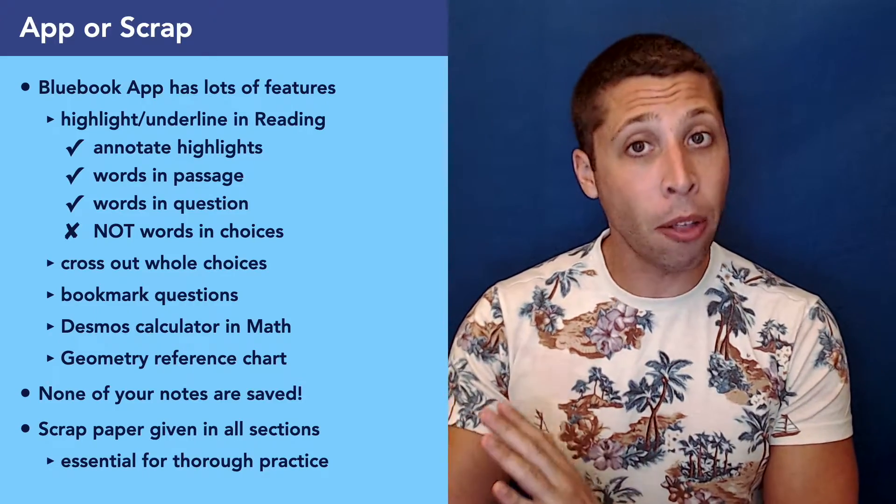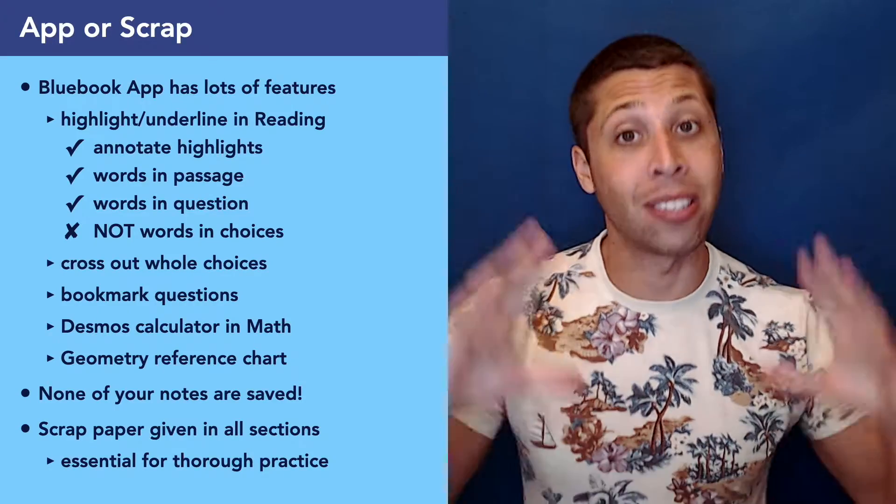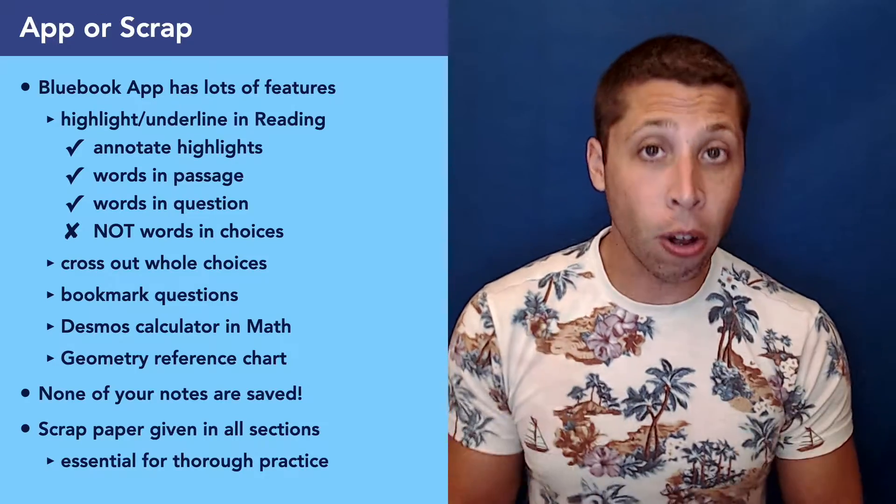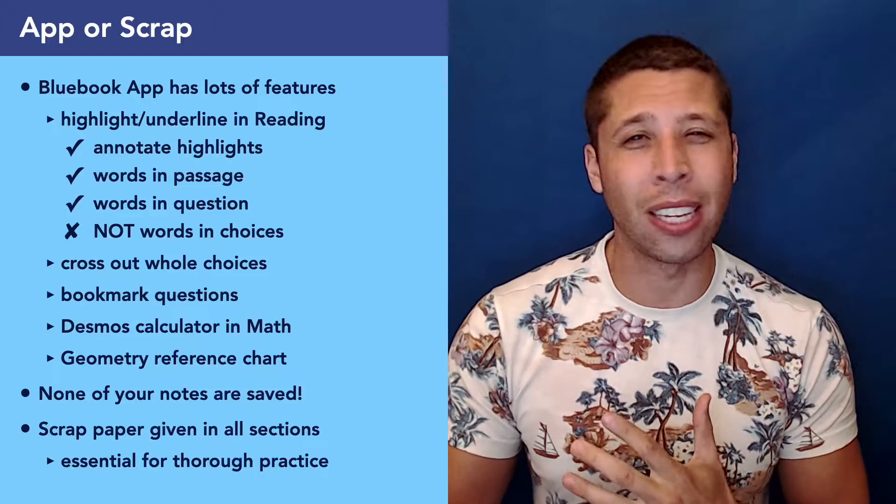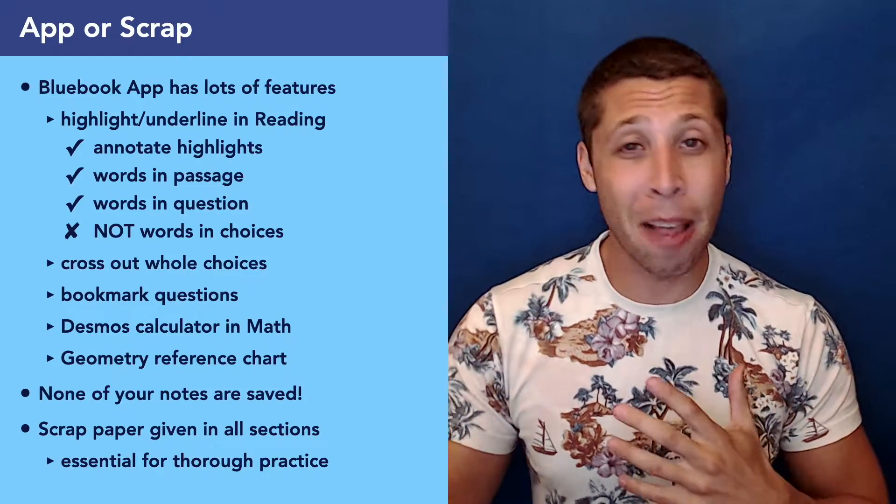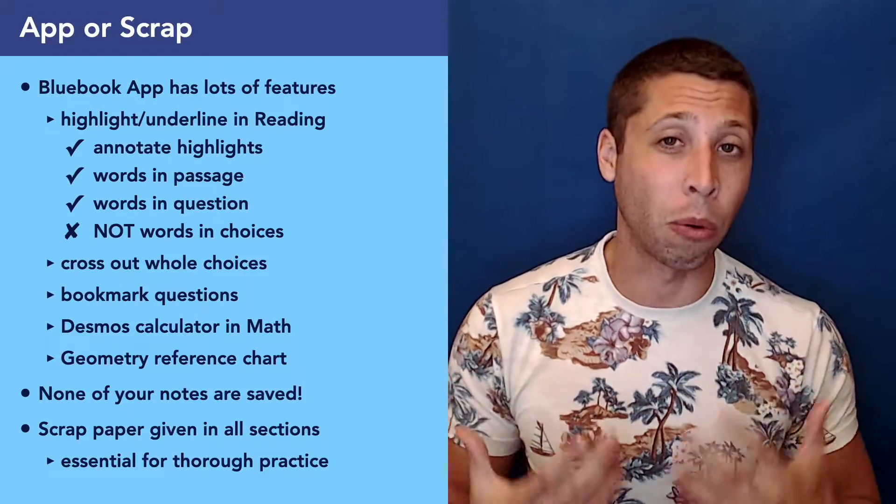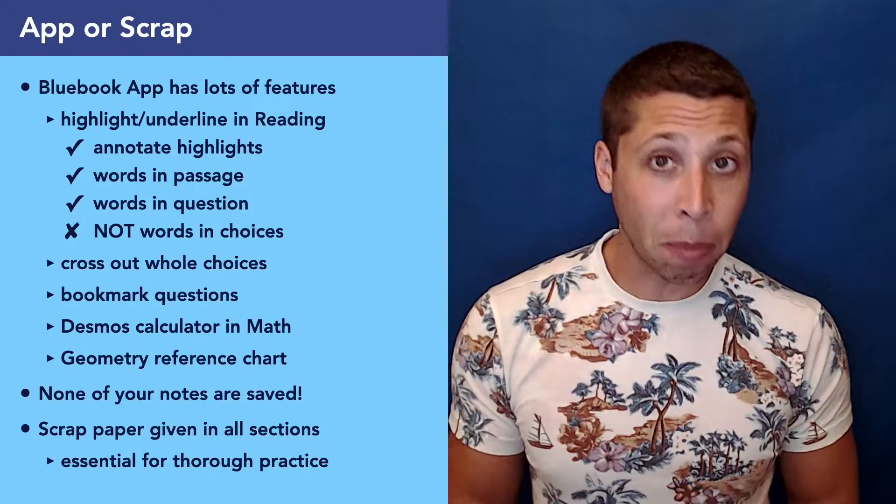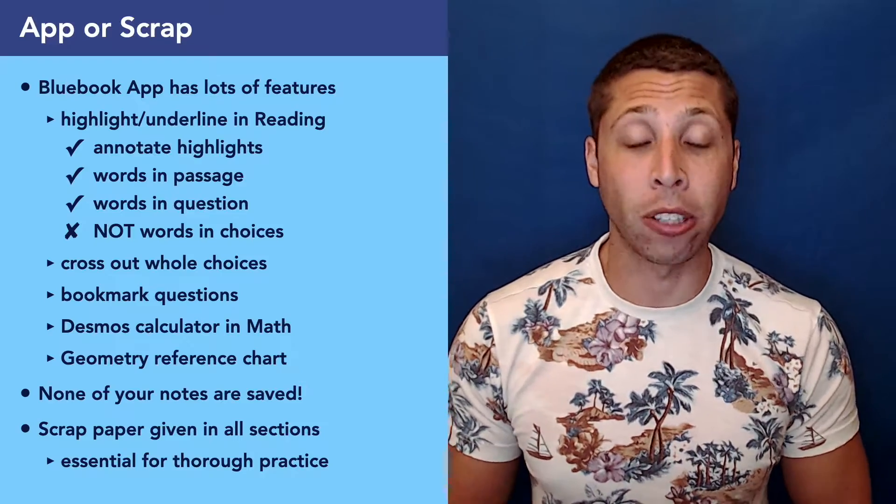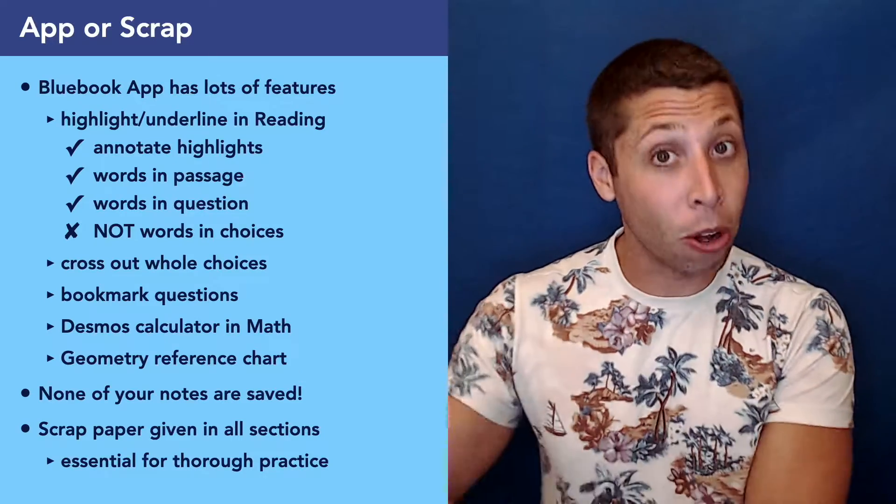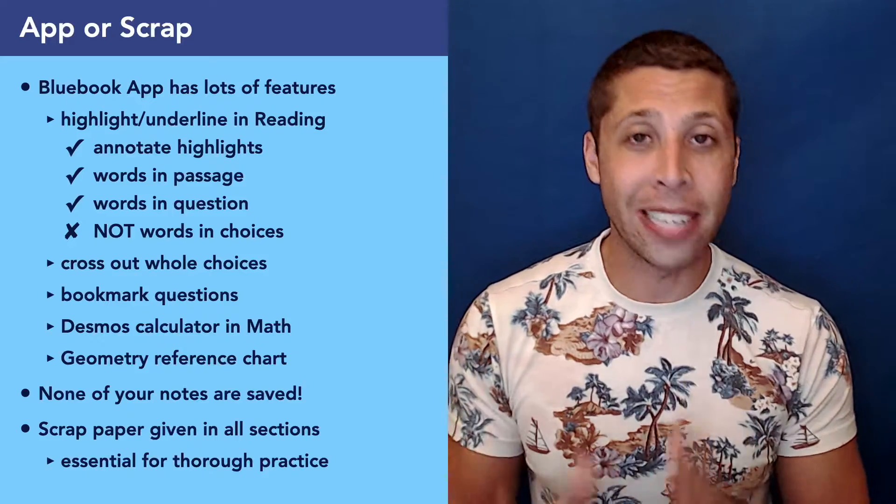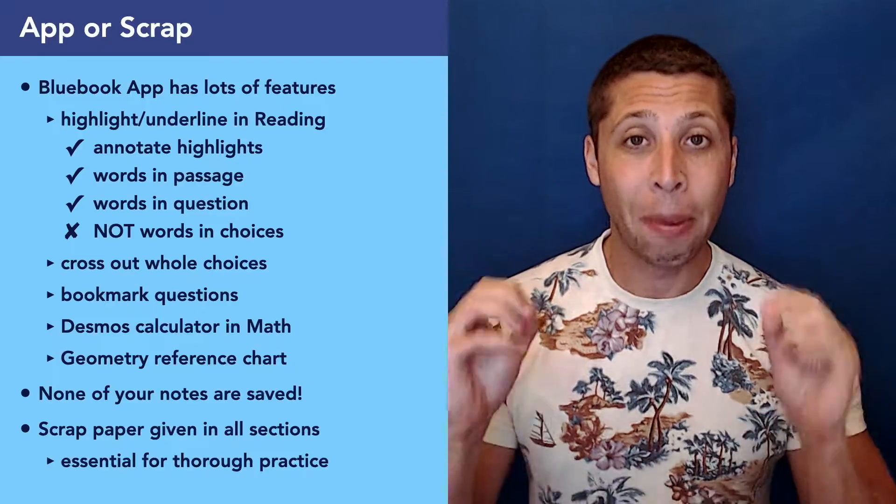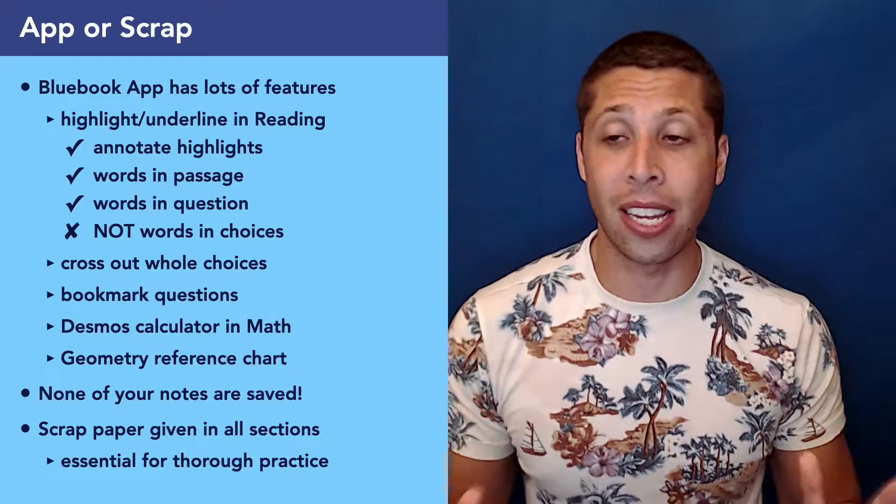Let's dive right in and talk about what the Bluebook app even looks like. This is the benefit of a digital SAT - it lets us do some new cool things. In the reading section, you can highlight or underline specific words, but it's not that simple. You can also use the Desmos calculator that is built into the app for all the math sections, as well as a geometry reference chart.